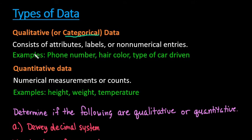Okay, qualitative data is data that consists of attributes, labels, or non-numerical entries. So this is anything you can't do math with. Examples that I have written down here are like your phone number, your hair color, type of car driven.